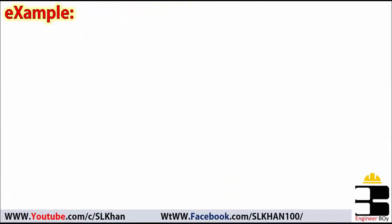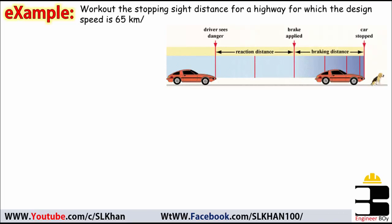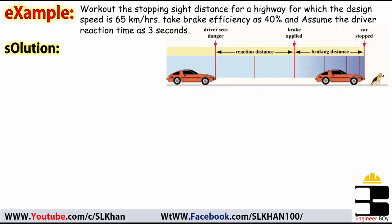Suppose let's say if we are asked to determine the stopping sight distance for a highway for which the design speed is 65 kilometers per hour and we are informed to take brake efficiency as 40 percent and the driver reaction time which can be assumed as three seconds. So these are given and let's calculate the stopping sight distance now, which must be reaction distance plus braking distance.